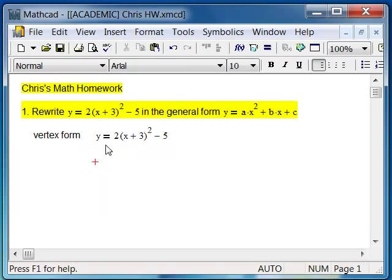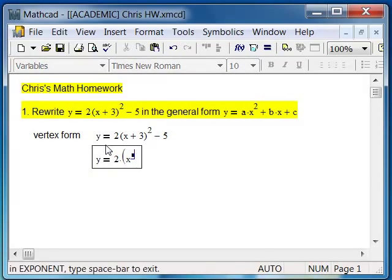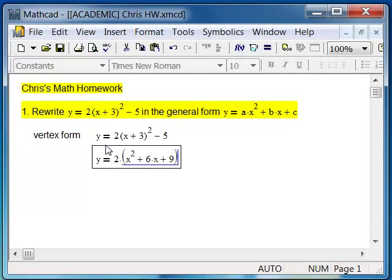And then the student might be working down the page, as I'll show you here. If they're a capable student, which I'm sure many of yours are, we have 2 times x squared plus 6x plus 9 if we square the binomial x plus 3 squared, and we have the minus 5 at the end.